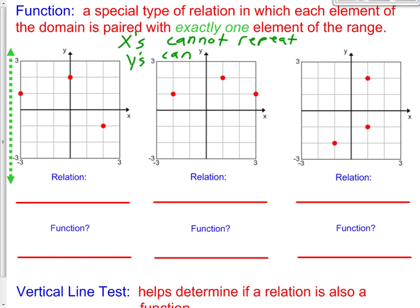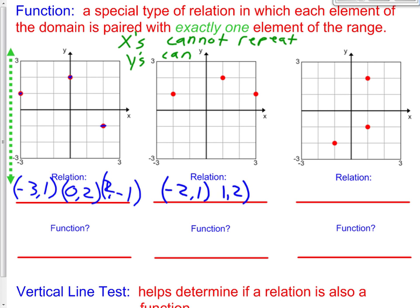Let's list all of the ordered pairs from our relation. This one is at left 3, up 1, so it's (-3, 1). Then we have (0, 2), and (2, -1) for our third point. Continuing: (1, -2), (1, 1), (2, 1), and (3, 1). Now we ask: is this a function? Our x-values are -3, 0, 2 — the x's do not repeat. Yes, this is a function. Looking at our middle relation: -2, 1, 3. X's do not repeat. Yes, this is a function.